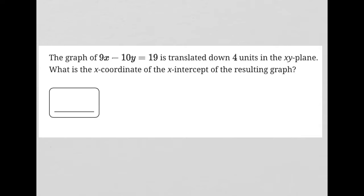The problem states: the graph of 9x minus 10y equals 19 is translated down four units in the xy-plane. What is the x-coordinate of the x-intercept of the resulting graph?